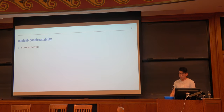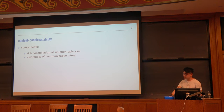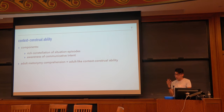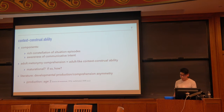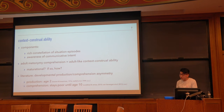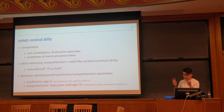Now we have our two components of context-construal ability: the rich constellation of situation episodes in memory, and this awareness of communicative intent. If this is what adults rely on to do metonymy, it begs the question of whether this ability is maturational and if so, how does it come online? In the literature, we found a really striking production and comprehension asymmetry. Researchers have documented metonymy production as early as age two, very productive in these children, but comprehension was not really reliable on tasks until maybe age 10 or 12. Generally these studies attributed this deficit to theory of mind limitations in figurative language processing.